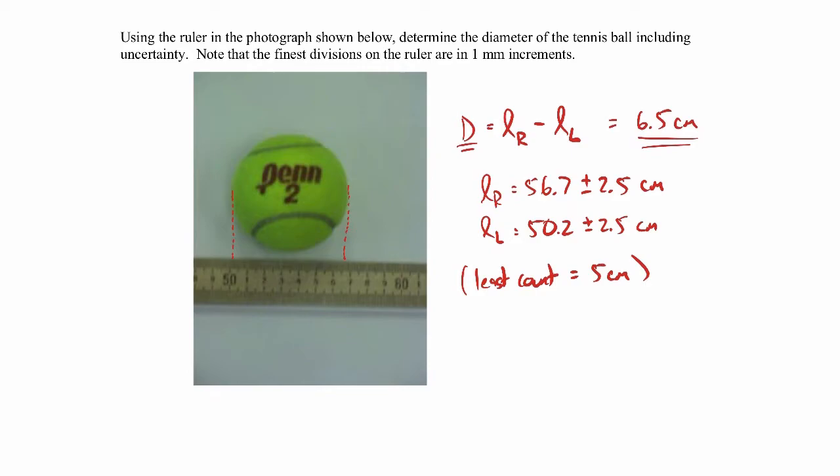My uncertainty would be plus or minus one half that least count. Even though the divisions are in one millimeter increments, I just can't see it that well. So I have 95% confidence that I can read it to within plus or minus 2.5 centimeters.